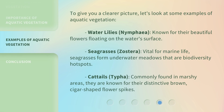To give you a clearer picture, let's look at some examples of aquatic vegetation. Water lilies (Nymphaea) are known for their beautiful flowers floating on the water's surface. Seagrasses (Zostera) are vital for marine life — they form underwater meadows that are biodiversity hotspots. Cattails (Typha) are commonly found in marshy areas and are known for their distinctive brown, cigar-shaped flower spikes.